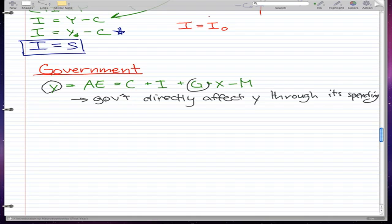For right now, in our case, G is like investment - totally autonomous. We're not going to assume that there's induced spending. For government, it's just completely autonomous spending.